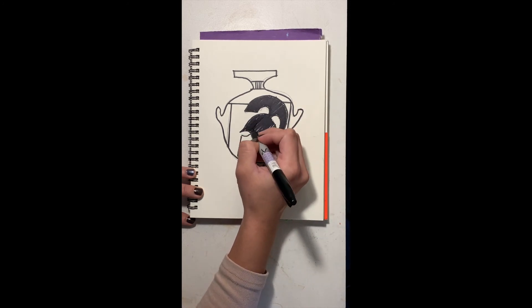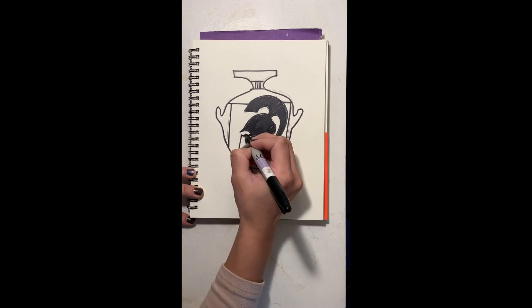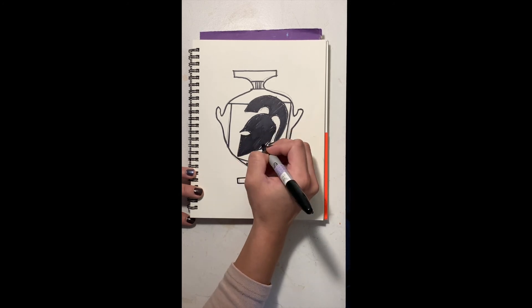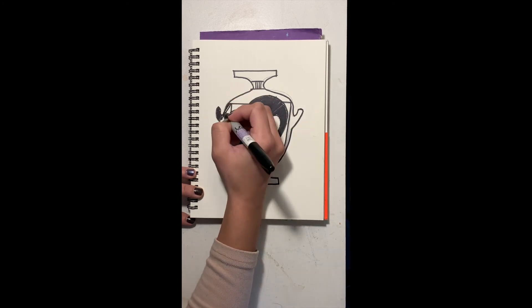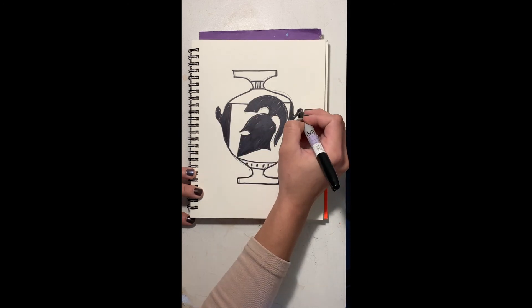And I tried to speed this up so it would be quick but you get the idea. Now in my background it will be the color of the clay which is kind of a reddish brown.